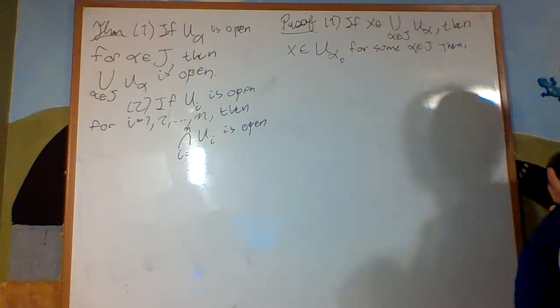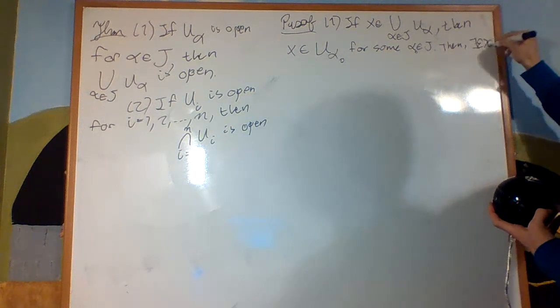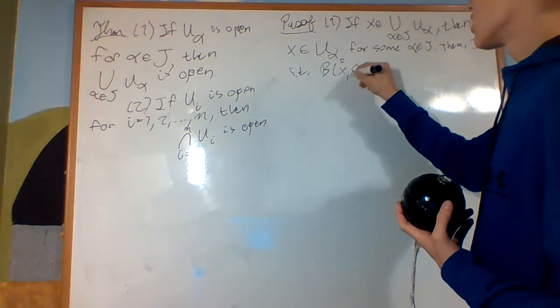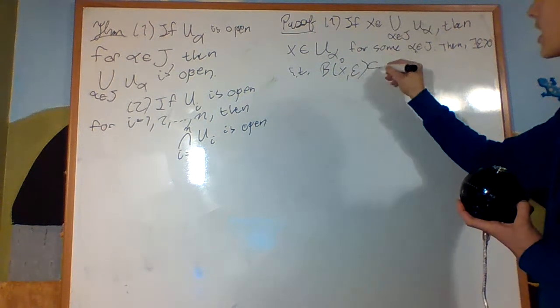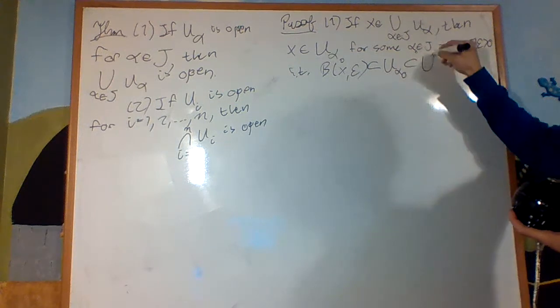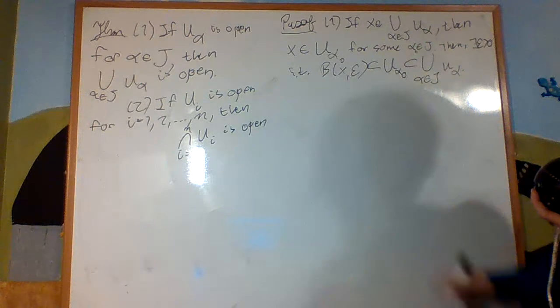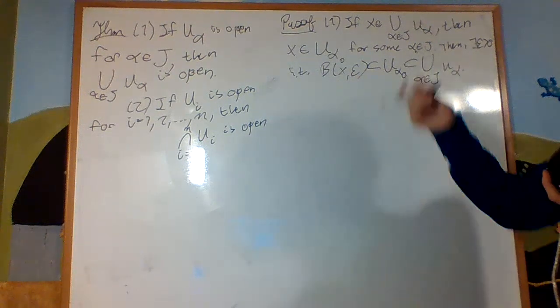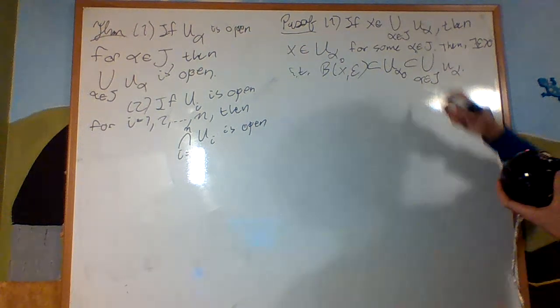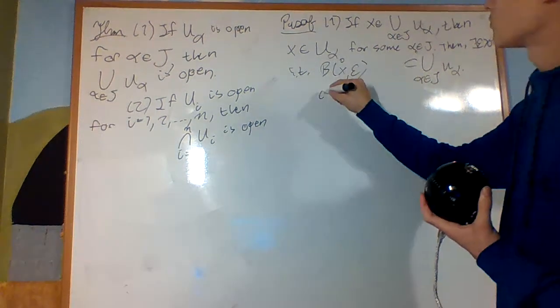Then, U_alpha naught is open, so then there exists epsilon bigger than zero such that the ball of x around x of radius epsilon is a subset of U_alpha naught, by definition of openness. But U_alpha naught is a subset of the union. And so we've proven that for every x, x is an element of some U_alpha naught, which is open, so that you can create it into a chain of subsets, so that we can get rid of that middleman. There we go. We've proven it.